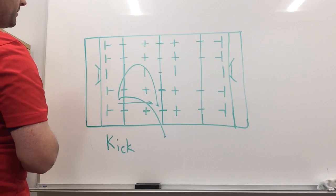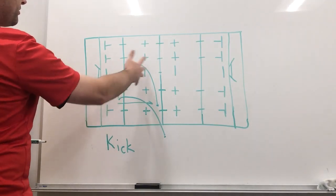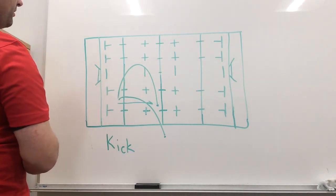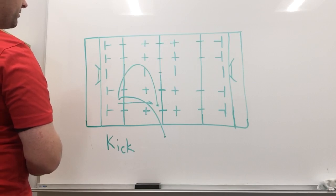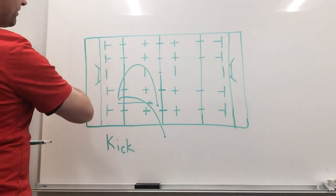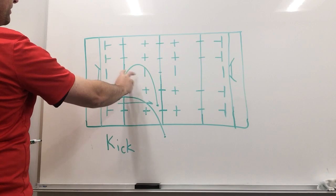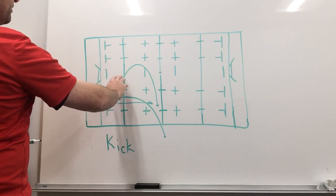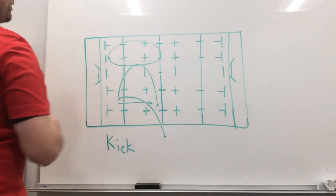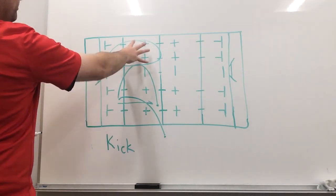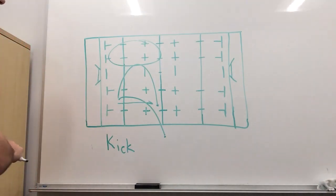Another option might be maybe we have the ball in our own 22, but their defense is disorganized. Maybe we won a turnover and they weren't ready for it. That's probably the most common situation that would justify flinging it out to our backs and having a good run. Perhaps maybe their defense is sucked in and so there's lots of space out here on the wings. Maybe we have faster wings or full backs than they do and there's space to exploit. So maybe that's the time where we're going to go ahead and have a nice attack where we pass it out to our backs.